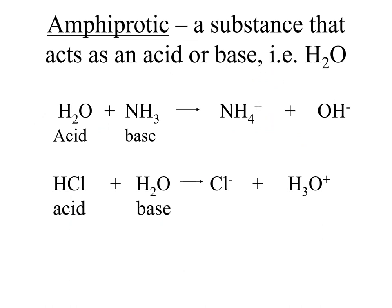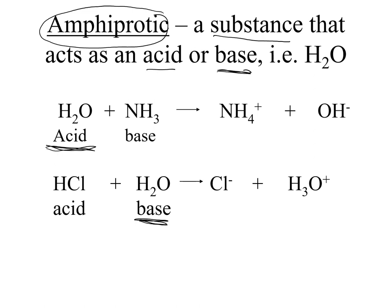You may have noticed that in the previous examples, water acted as an acid in one example and as a base in another. This introduces a new term: amphiprotic — when a substance sometimes acts as an acid and sometimes acts as a base. Water is just one example; there are other compounds that can behave the same way. So know the term amphiprotic: sometimes it's an acid, sometimes it can act as a base.